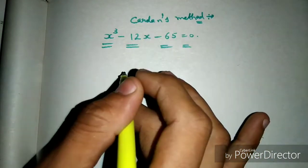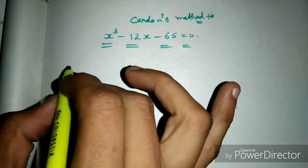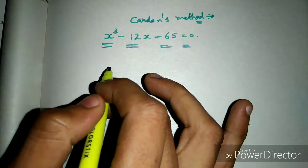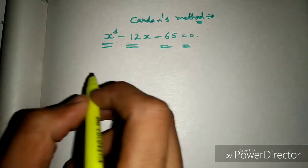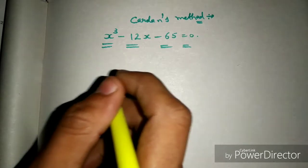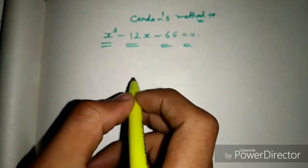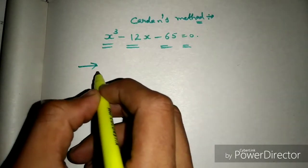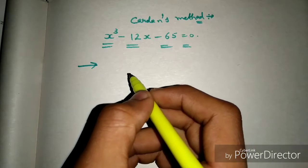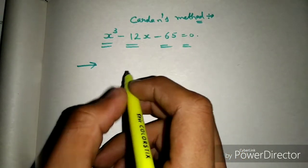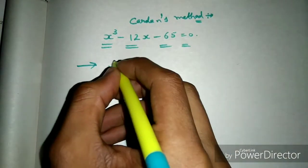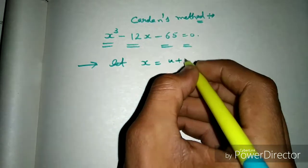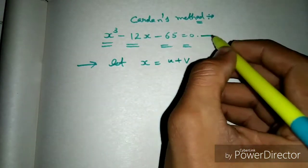In this equation the second term is missing from the beginning, so we can easily solve it. We will also see that in some questions all the terms are present — a complete equation — and in some the third term from the start is missing. According to Cardan's method we can easily solve it. So, given the equation, let x = u + v. Let us consider this as equation number one.